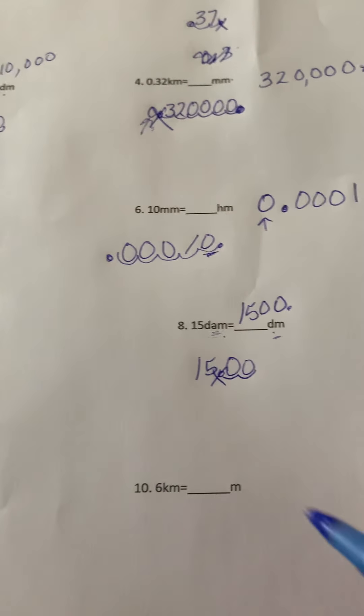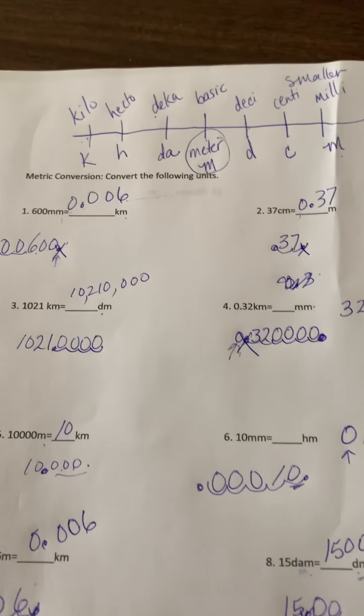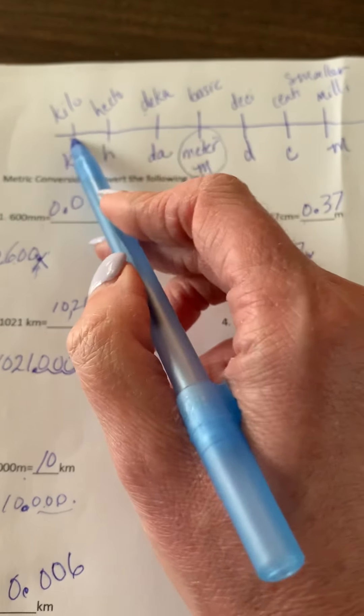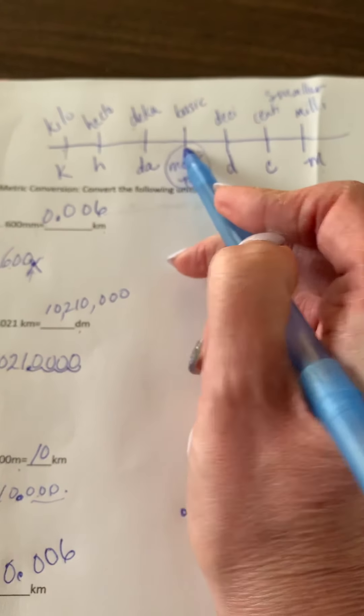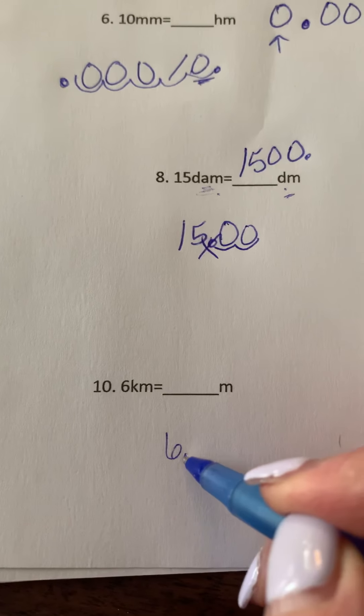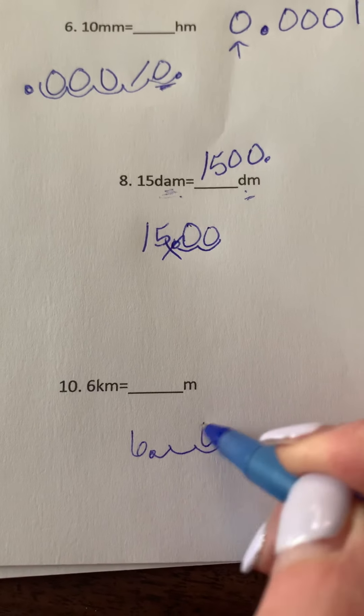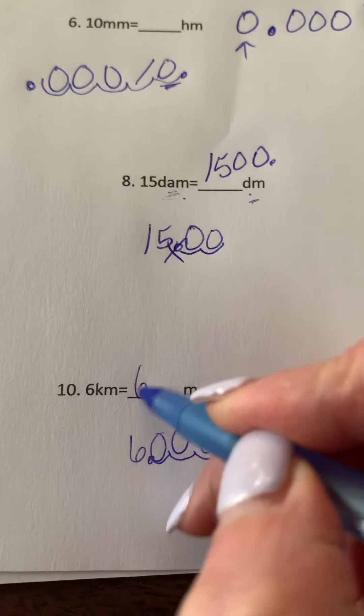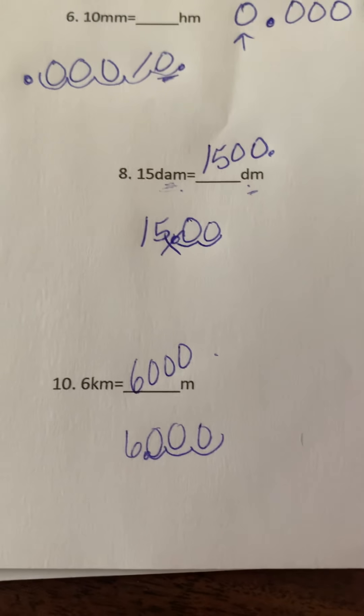Our brains all work a little bit differently. So it's whatever makes the most sense to you. Last one. Kilometer to meter: one, two, three to the right. Original decimal in a whole number is right at the back. So one, two, three. Fill in those zeros. And you're going to get 6,000 meters.